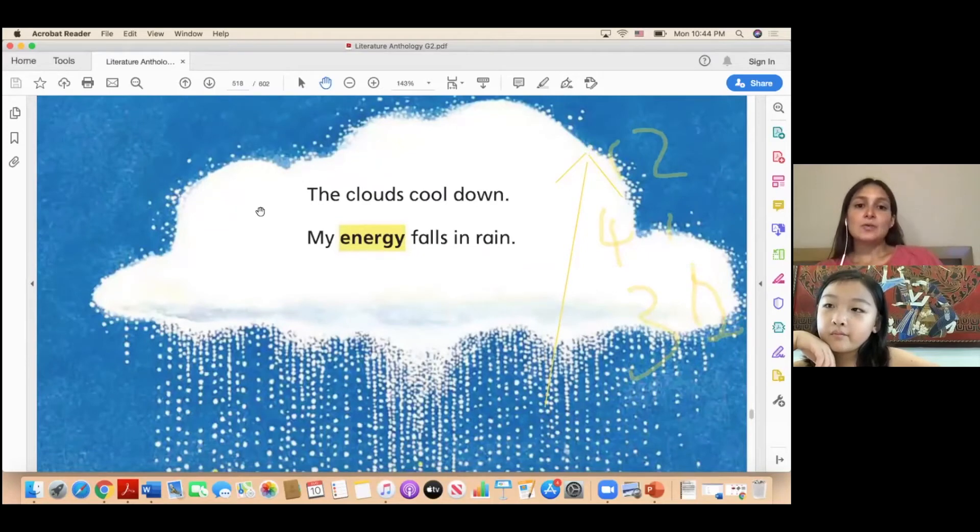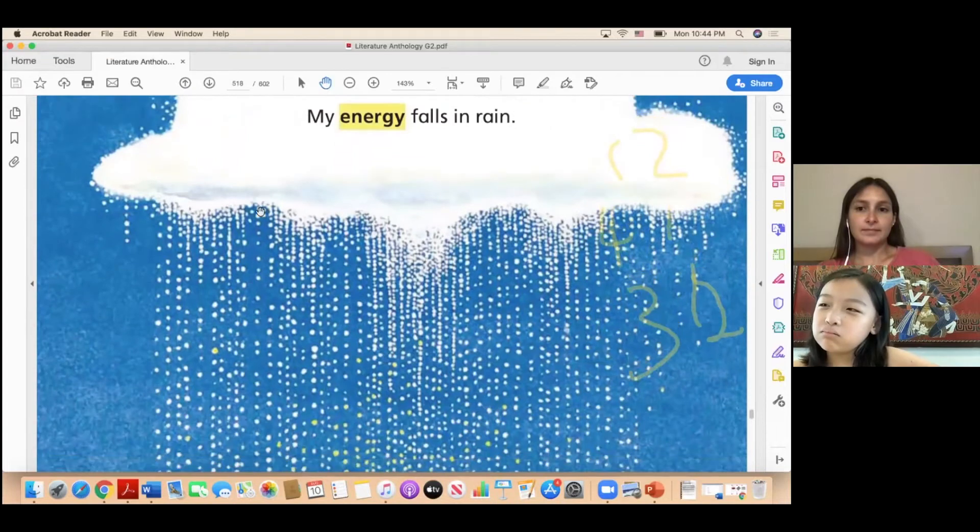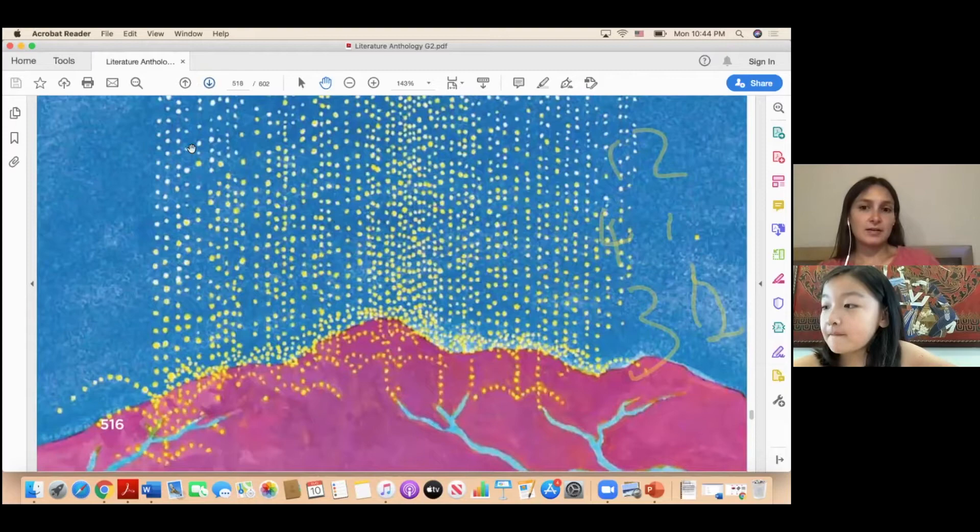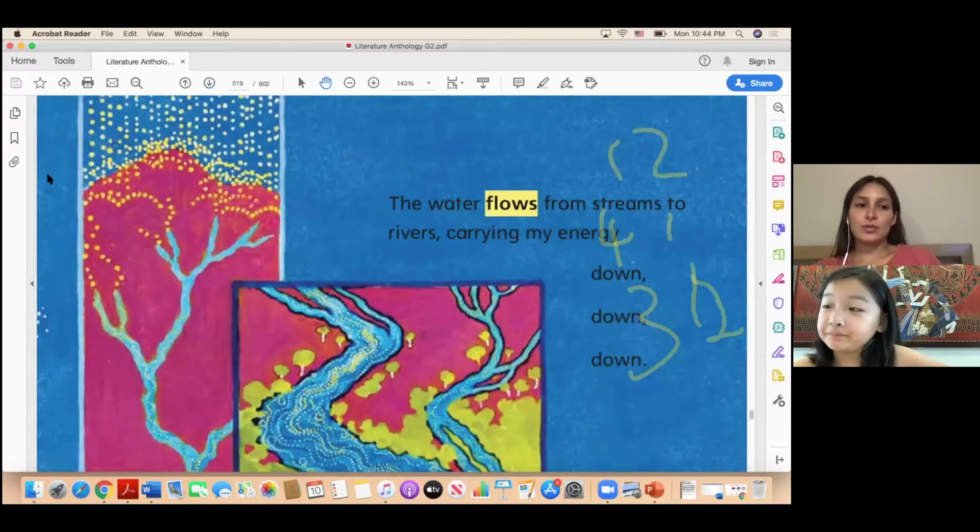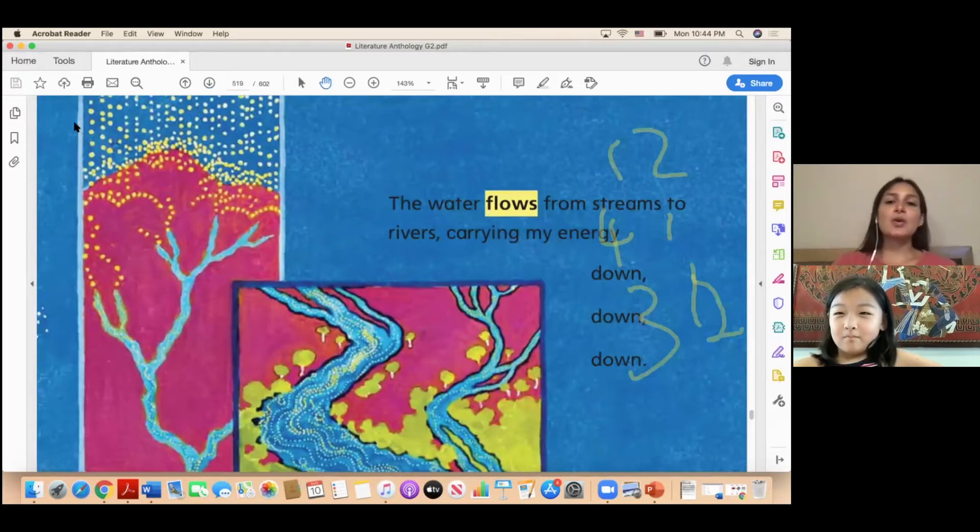So the clouds cool down, my energy falls in rain. The clouds cool down, my energy falls. Okay, the water flows from streams to rivers, carrying my energy down, down, down. Okay, so the reason why Alita, because I see that this is bothering you a lot and it shouldn't, my...